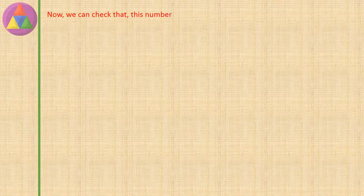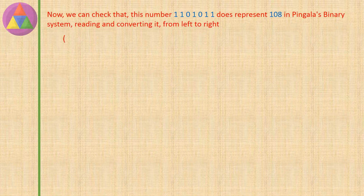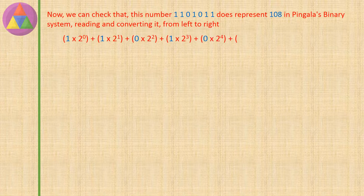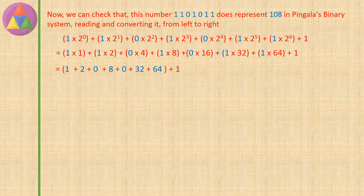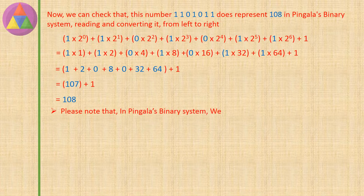We can verify that 1101011 represents 108 in Pingala's binary system, reading and converting from left to right: (1 × 2⁰) + (1 × 2¹) + (0 × 2²) + (1 × 2³) + (0 × 2⁴) + (1 × 2⁵) + (1 × 2⁶) + 1 = 1 + 2 + 0 + 8 + 0 + 32 + 64 + 1 = 107 + 1 = 108.